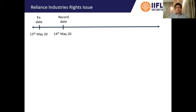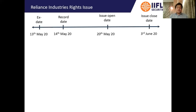An investor who is entitled for this rights issue will receive one additional share for every 15 existing shares held, at the price of Rs.1,257 per share. Such an investor can exercise his rights and subscribe to the new shares from 20th May 2020 — the issue opening date — and the issue will remain open till 3rd June 2020. So 20th May to 3rd June is the period during which existing shareholders can subscribe to the rights shares offered at Rs.1,257 per share.